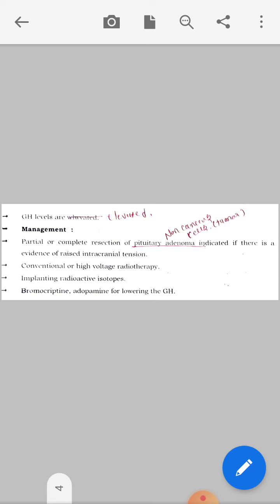Next is conventional or high voltage radiotherapy by implanting radioactive isotopes to check if it is cancer cells or non-cancer cells. And drugs which are used for this condition are Bromocryptine and Adopamine for lowering the GH.